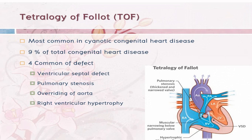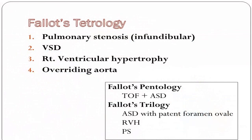TOF is the most common cyanotic congenital heart disease, accounting for nearly 9 to 10 percent of all congenital heart disease. The four components are: infundibular pulmonary stenosis, ventricular septal defect, right ventricular hypertrophy, and overriding of the aorta.